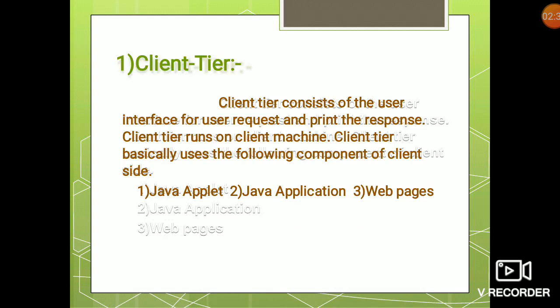Client tier consists of the user interface for user requests and prints the response. Client tier runs on the client machine and basically uses the following components: Java template, Java application, and Java web pages. Ultimately, client tier has the logic of how the entire application can be interacted with the user — how the user will communicate with your system.